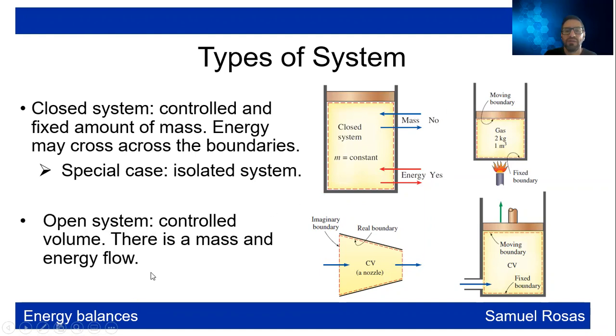An open system is when you control volume and the mass and energy is flowing. So here you have a nozzle, which is a system where mass is entering and going out. Or in this piston, you also have this energy, this mass that is entering.